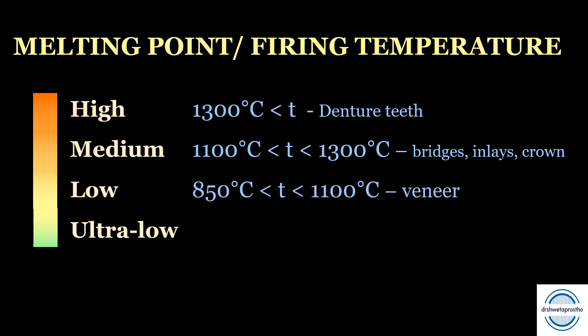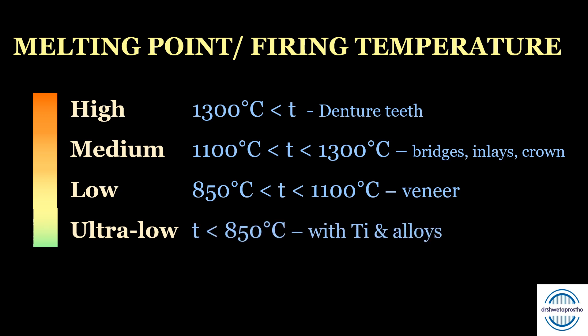Low fusing dental ceramics have a temperature range between 850 to 1100 degrees Celsius and are used to make veneers over cast metal crowns. Ultra-low fusing ceramics have a fusion temperature less than 850 degrees Celsius and are used with titanium and its alloys.